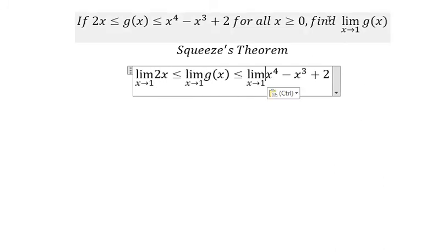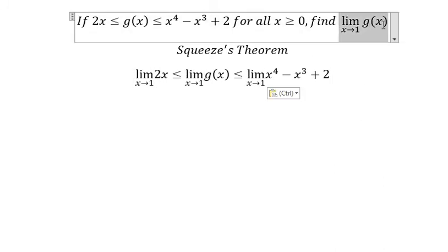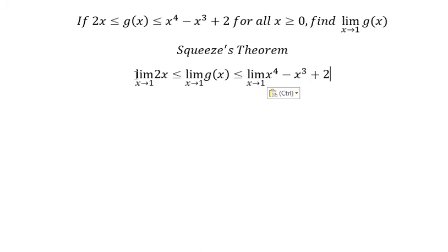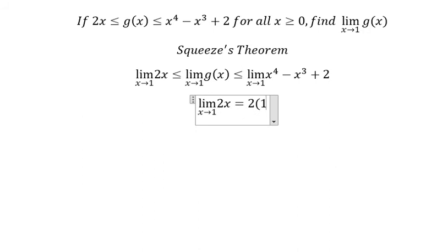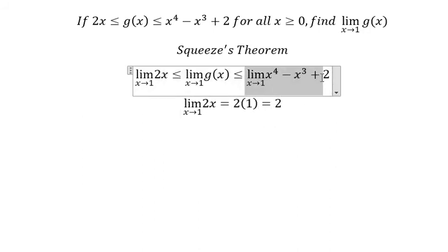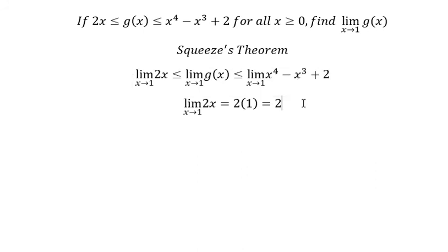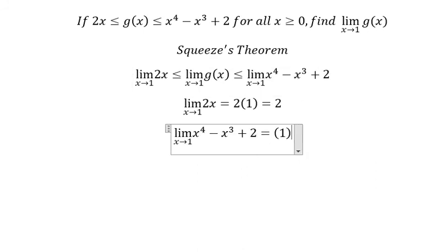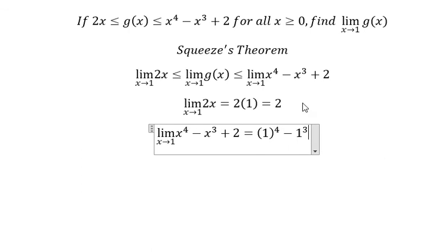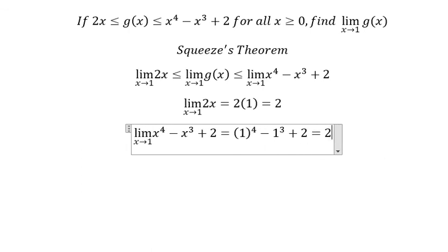The question asks us to find the limit of 3s. We know that the limit of 2s is 2 multiplied by 1, which gives us 2. The limit of the other side equals 1 to the power of 4 minus 1 to the power of 3 plus 2, and you get 2.